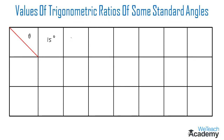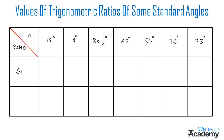The standard angles in the table are 15 degrees, 18 degrees, 22 and a half degrees, 36 degrees, 54 degrees, 72 degrees, and 75 degrees. Now let us write the trigonometric ratios in this column — first sine and then cosine.